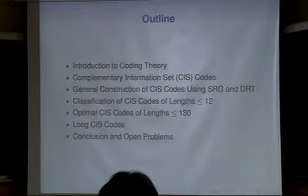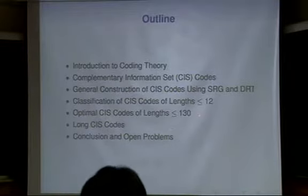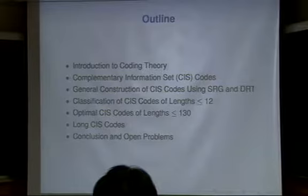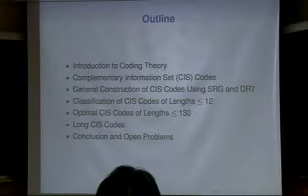However, we find a family of CIS codes which are optimal — in other words, which have a large minimum distance. This is for finite length. So what happens if the length is 1 million or something, then what's the corresponding minimum distance? We just discuss the issue of long CIS codes and conclude this talk.